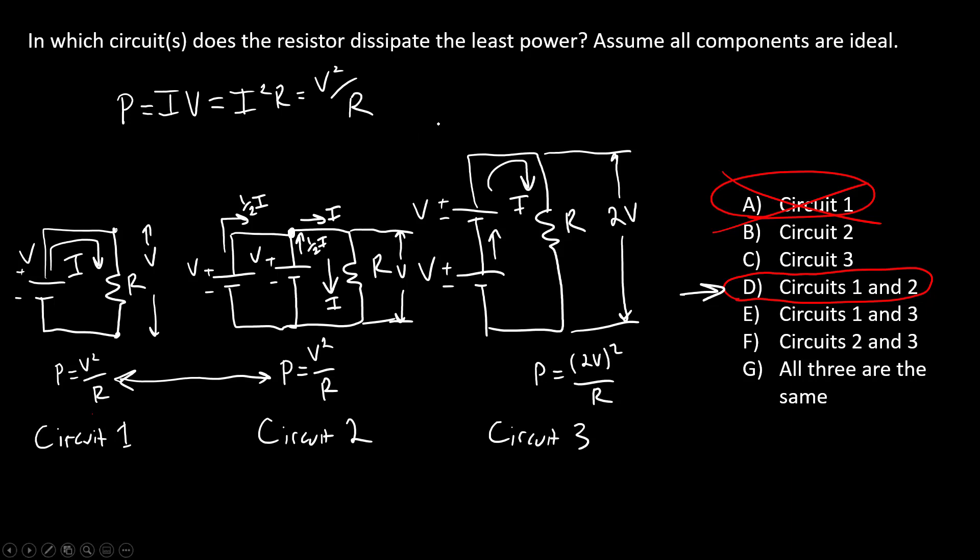So this is the first of several misconceptions that, again, usually if you give this to students before they've seen all the previous videos in this series, they'll fall for it and pick just circuit one. Hopefully, if you paid attention to the previous videos and everything about batteries and series in parallel, you understand the reasoning here and why the correct answer is D.